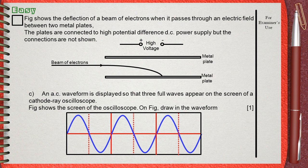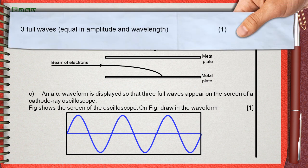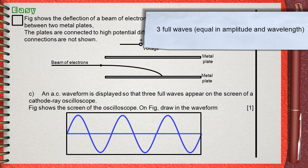After we reach the end of the screen, you can erase all these construction lines and keep the three waves and the center line only. The mark scheme gives one mark for this question: three full waves equal in amplitude and wavelength.